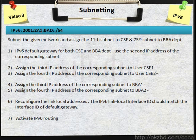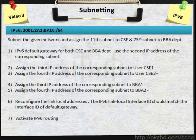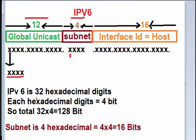Here we have an IPv6 address and a few questions. Let's first look at the IPv6 address. IPv6 is 32 hexadecimal digits. 32 is 12 plus 4 plus 16 equals 32, and among them, 12 are for global unicast — this is from the ISP — 4 for subnet, and 16 for interface ID. Interface ID is equal to host. Now, each hexadecimal digit is 4 bits, so total 32 into 4 is equal to 128 bits. For IPv4 it is only 32 bits, but for IPv6 it is 128 bits.